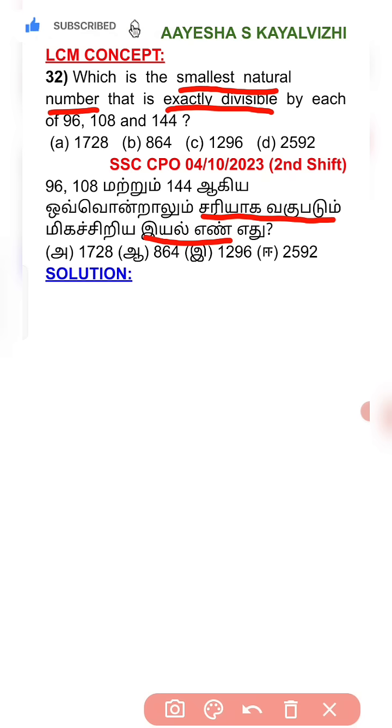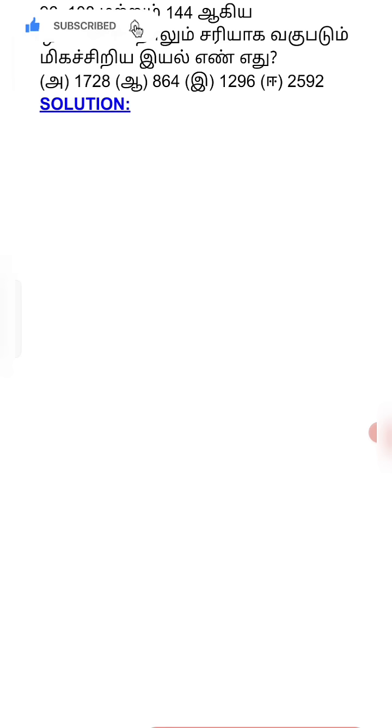There are four options for this question. We need to find the smallest natural number that is divisible by all three. Let's look at LCM and apply it. We have 96, 108, and 144.